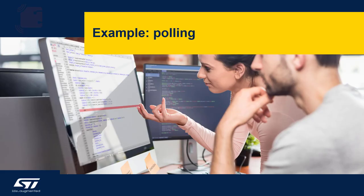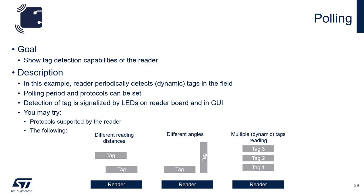It's time to move on to some of the hands-on examples featuring the polling capabilities of the discovery board. The goal is simply to show the tag detection capabilities of the reader. We'll set it up so that the reader periodically detects tags in the field. Both the polling period and the protocols can be set via the GUI, and the detection of the tag will be signaled by both LEDs on the reader board as well as in the GUI.